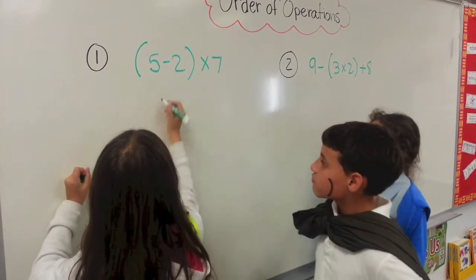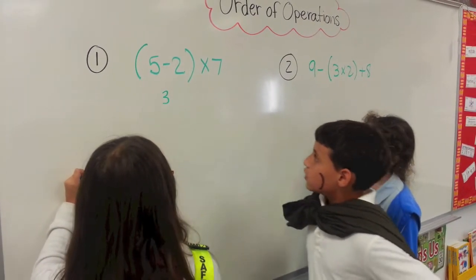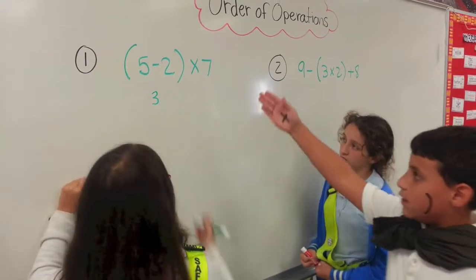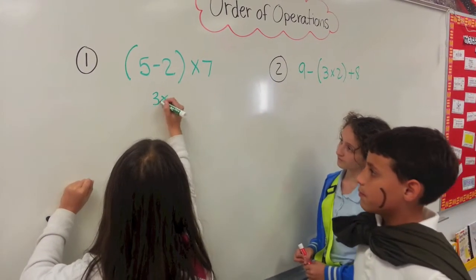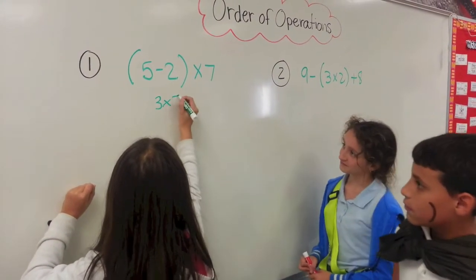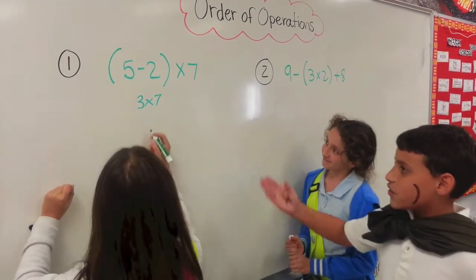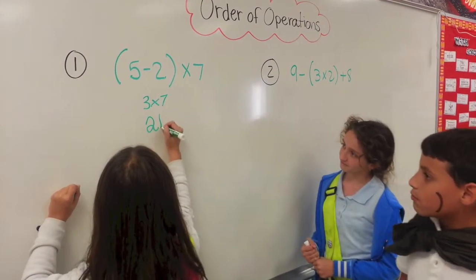Well, five minus two is three. What do I do next? Now, rewrite what's left in the problem. Seven. Since that's all the operation left, then solve it. Twenty-one.